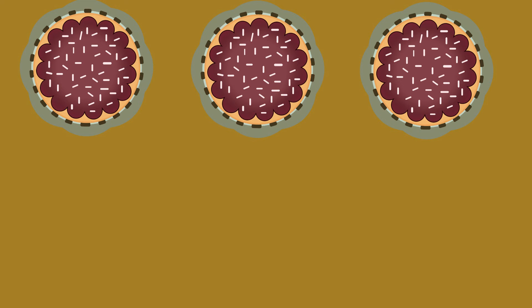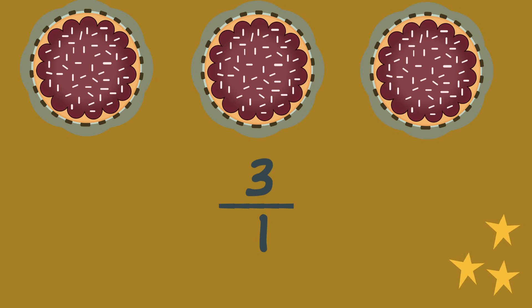All together there are three cakes, and each cake is cut into just one piece. Three is the number of cakes, and one is the number of pieces. Three over one is our fraction.